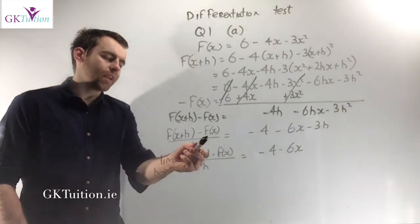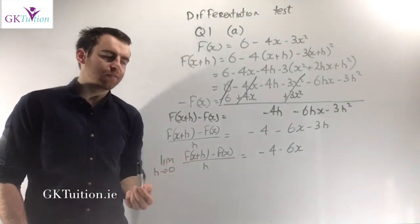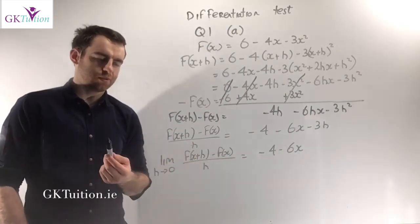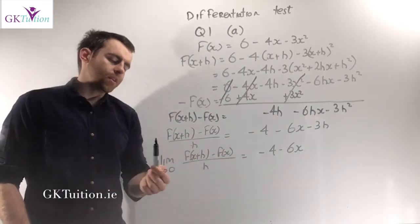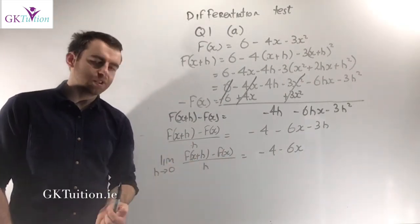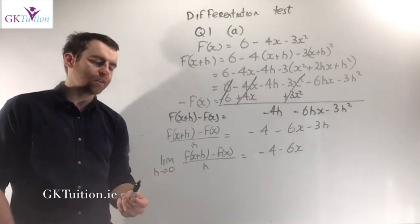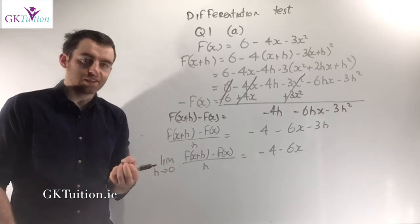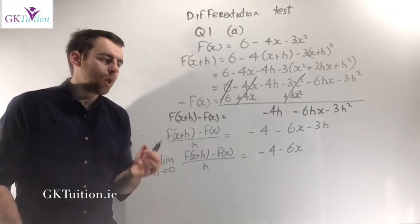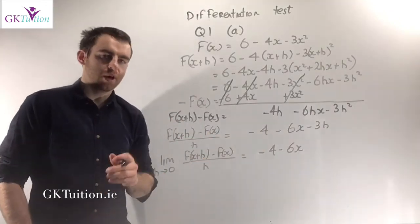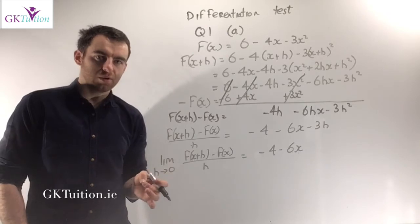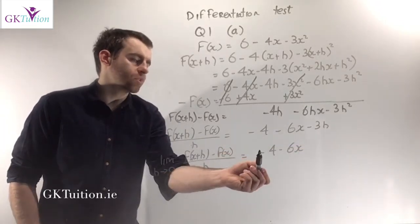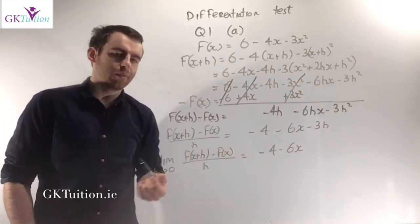Your next step is to compute f of x plus h minus f of x all divided by h, giving minus 4 minus 6x minus 3h. The last thing is the limit as h approaches 0 of what you had. h approaching 0 means in our heads we think of h as equal to 0, but you cannot actually sub in h equals 0 on paper. That term disappears, so you just have minus 4 minus 6x.